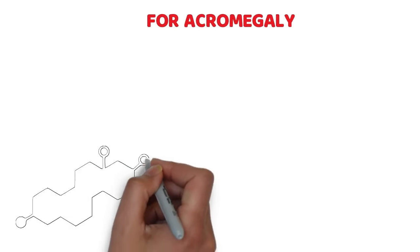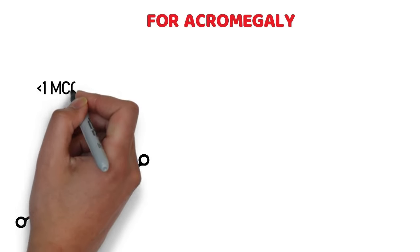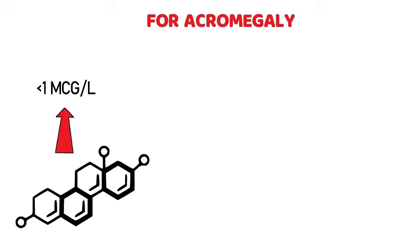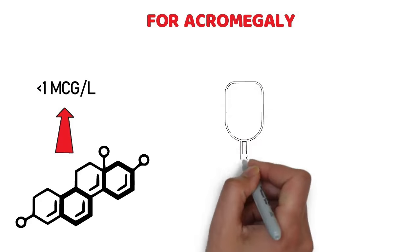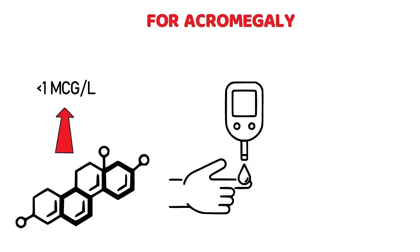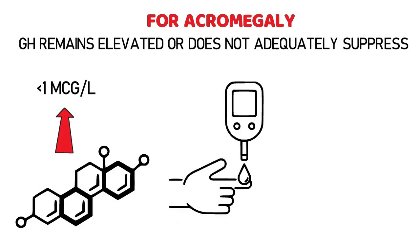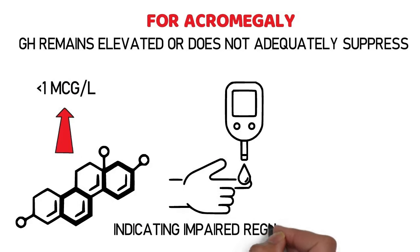For acromegaly, the test evaluates the growth hormone (GH) response. Normally, GH levels should suppress to less than 1 microgram per liter after glucose intake. In acromegaly, however, GH remains elevated or does not adequately suppress, indicating impaired regulation.